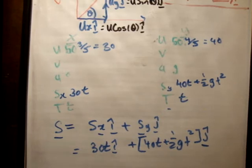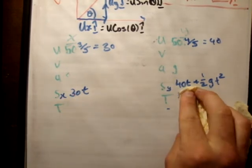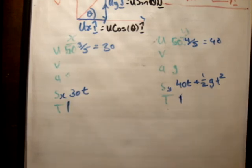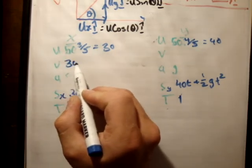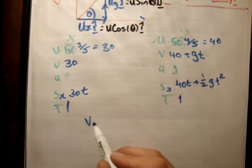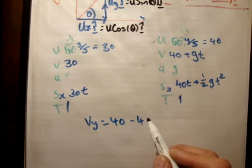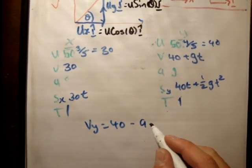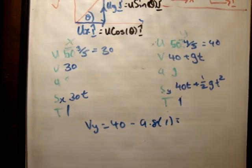So the next part of the question says, find the magnitude to the nearest meters per second and direction to the nearest degree of the velocity of the particle when t is equal to 1 second. Okay, so we need to basically find the speed after 1 second. So v is equal to u plus at, so it's 30 here, and it's 40 plus gt. So we'll say v sub y is equal to 40 minus 9.8 times 1. So that's equal to 30.2.